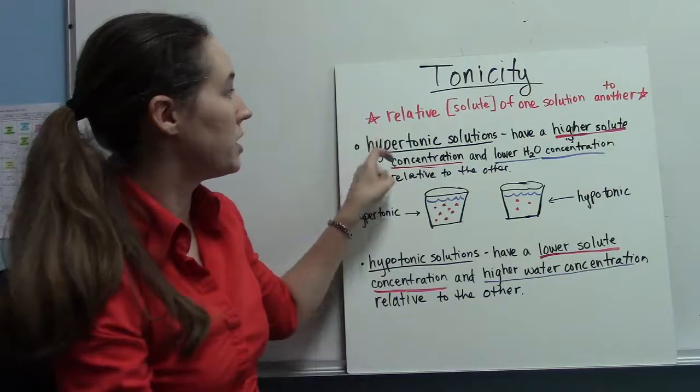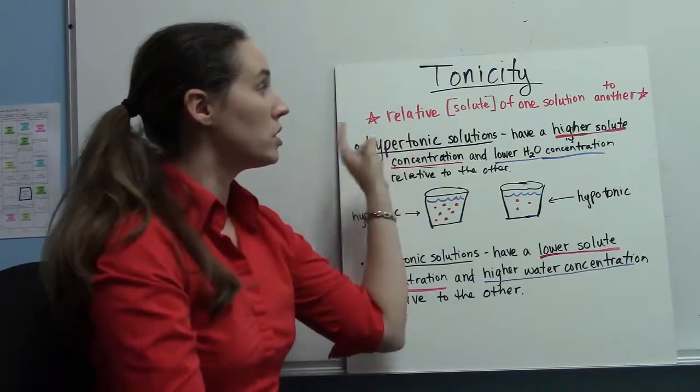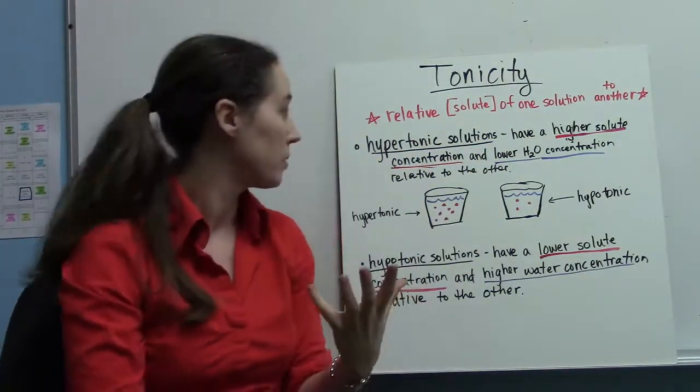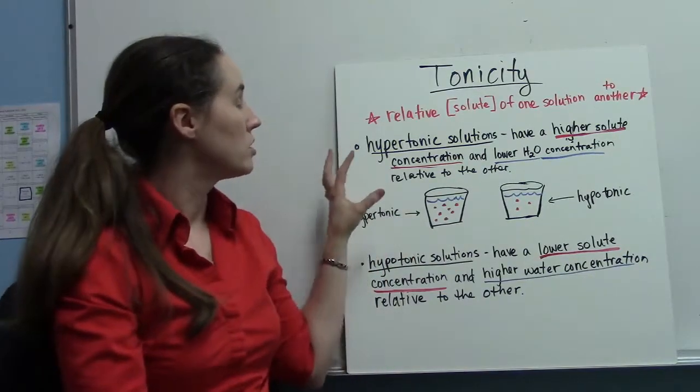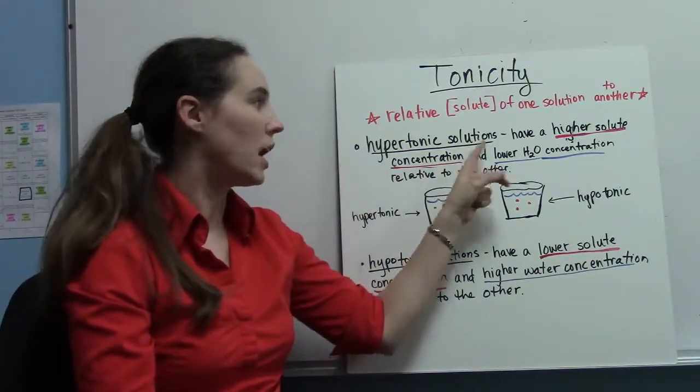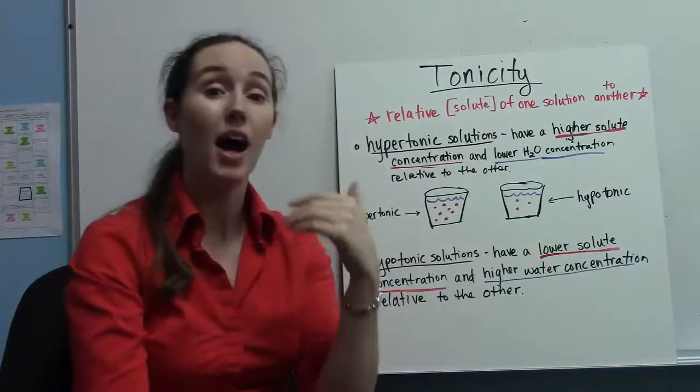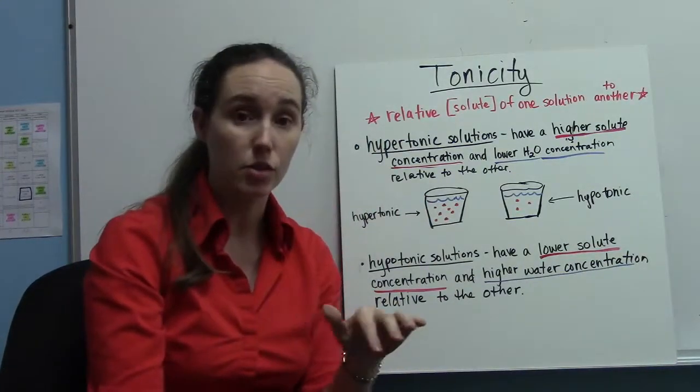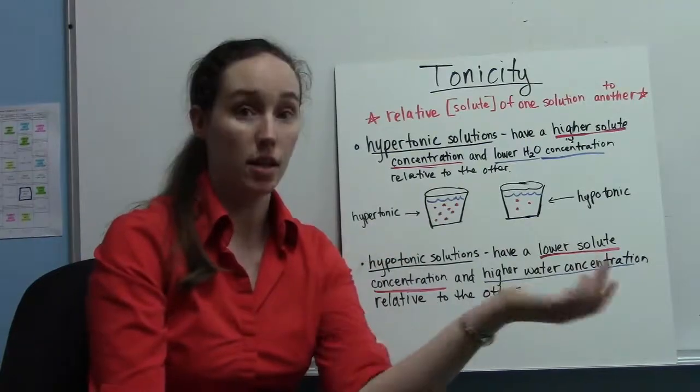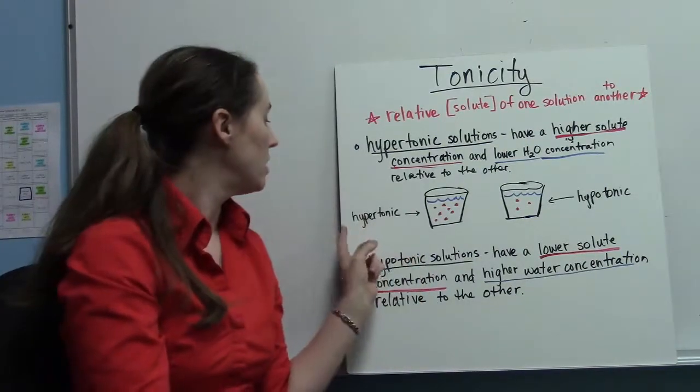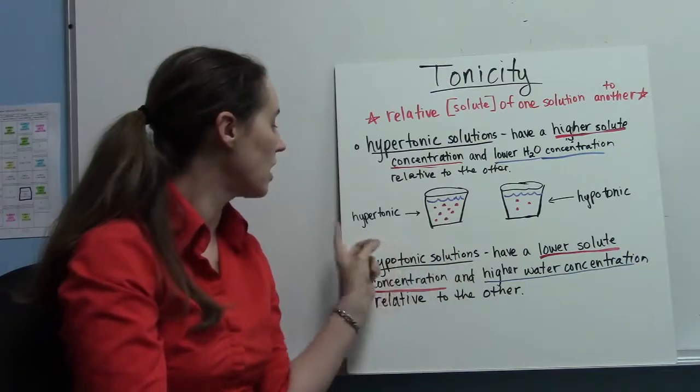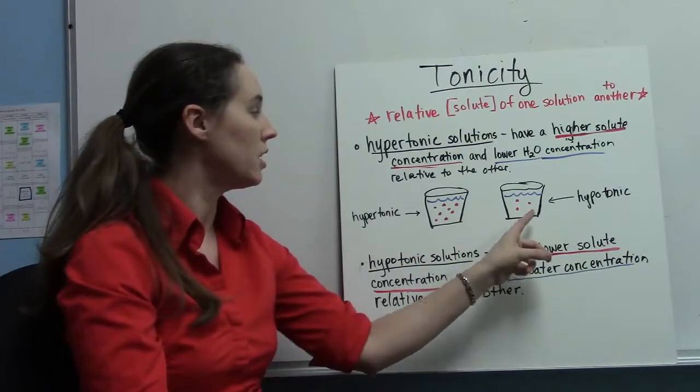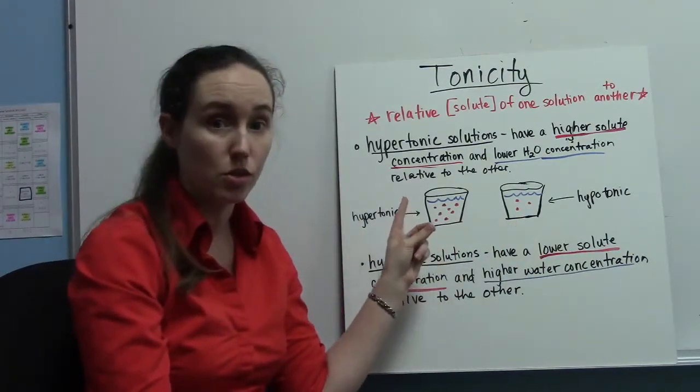Remember that tonicity is the relative solute concentration of one solution to another. Some solutions are hypertonic solutions and they have a higher solute concentration and therefore lower water concentration relative to another solution. So this cup here is hypertonic to this here. It has a higher solute concentration.